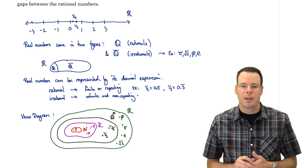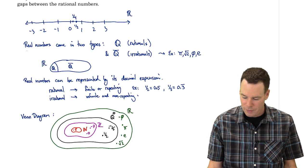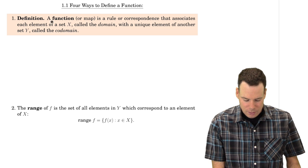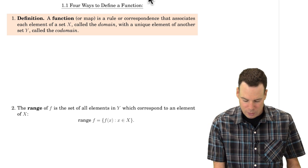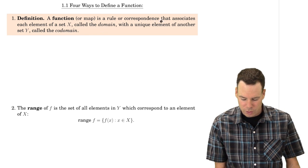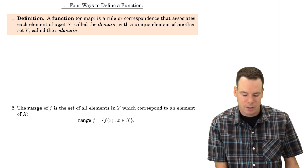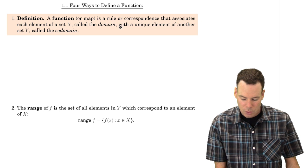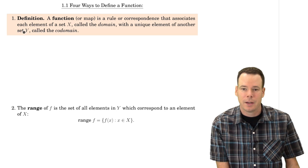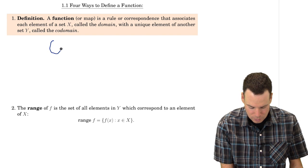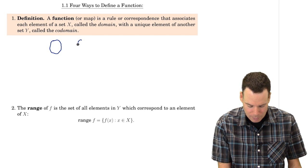Alright, so now let's go ahead and look at functions. What is a function? Well here's the definition: a function is a rule or correspondence that associates each element of a set X, called the domain, with a unique element of another set Y, called the co-domain. It's always handy to think of functions in terms of what we call a mapping diagram.